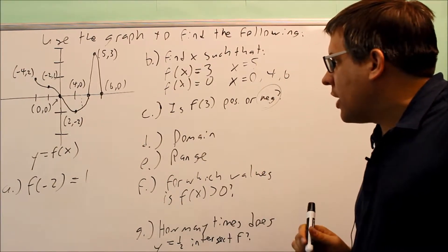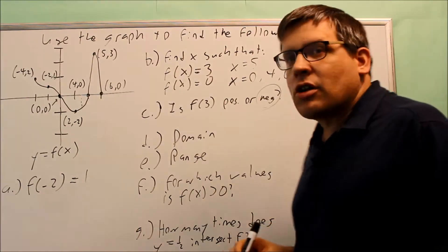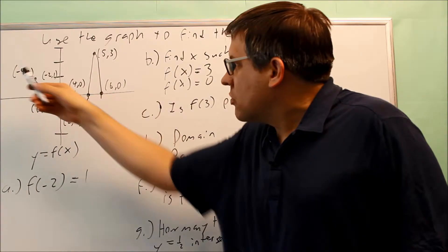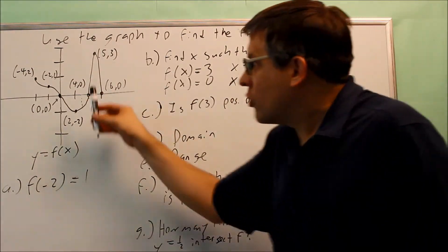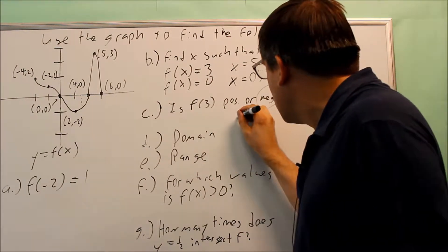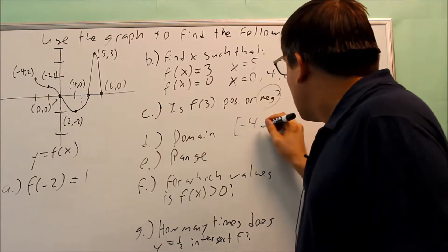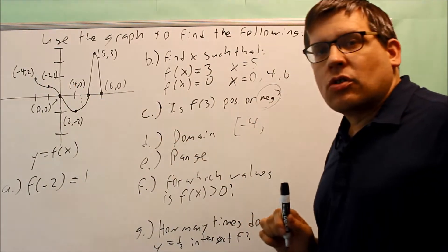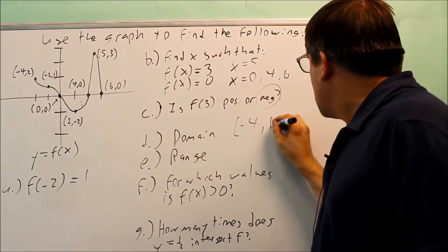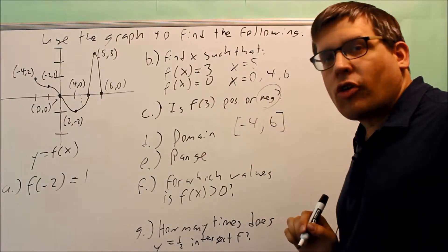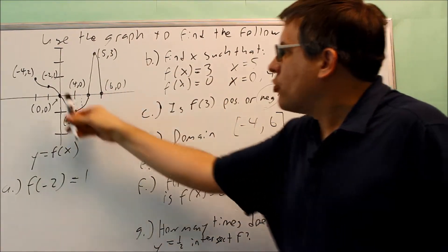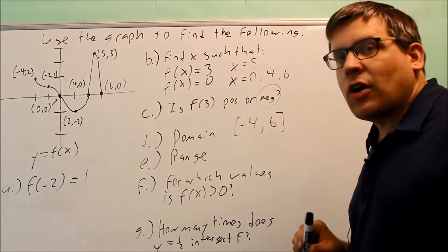Now for domain, I want to indicate the x values that the graph uses. All the way over here on the left-hand side, the farthest left that it goes has an x value of -4. There's no more part of the graph beyond x = -4. So my domain is going to be from -4—that's a bracket because it's a closed-in circle—all the way over to here where the x value is 6. Between -4 and 6, that's the x values the graph uses.